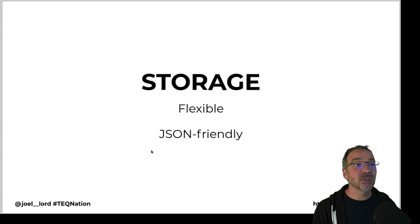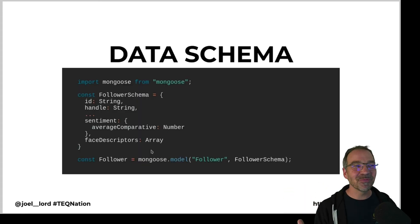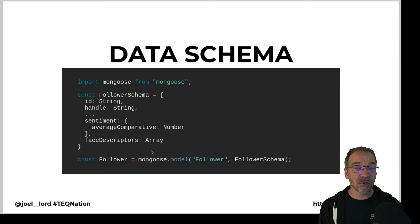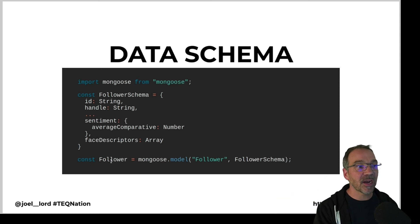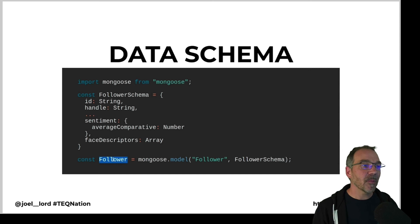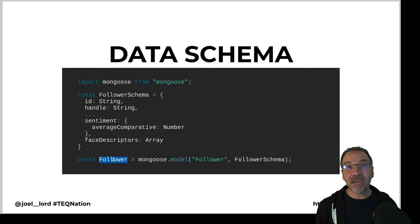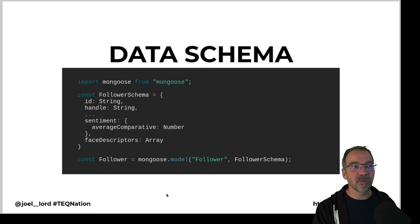I needed to store information somewhere flexible and JSON-friendly, so I used MongoDB with Mongoose as the library to connect. You create different schemas — for example, follower.findOne with some filters. It works well but is a little hard to debug. Looking back with hindsight, using the MongoJS driver would probably have been a little bit easier.